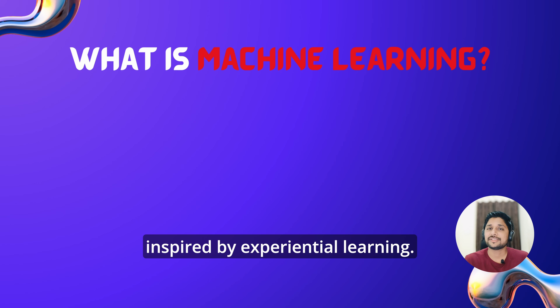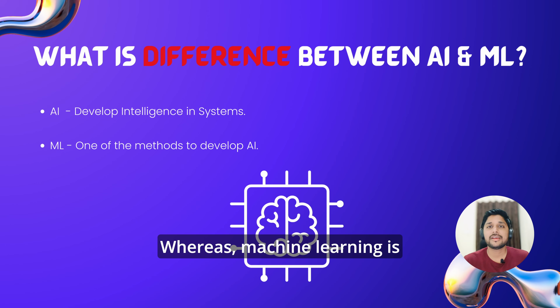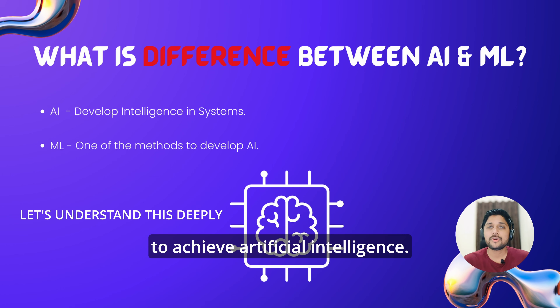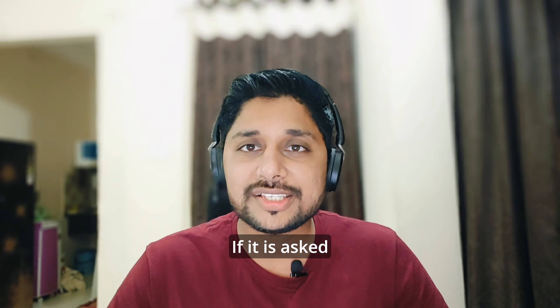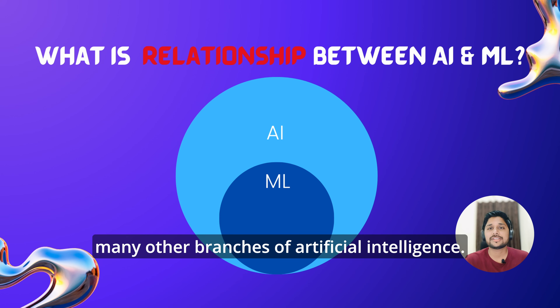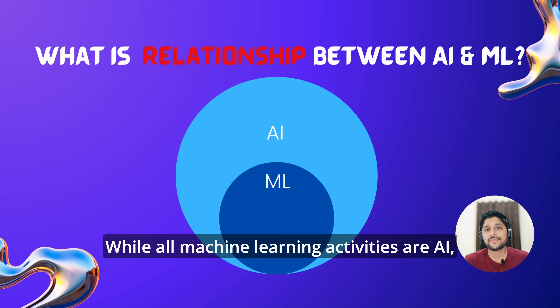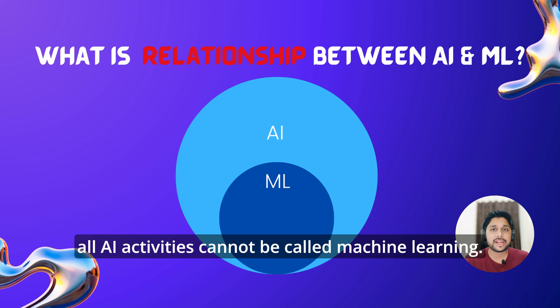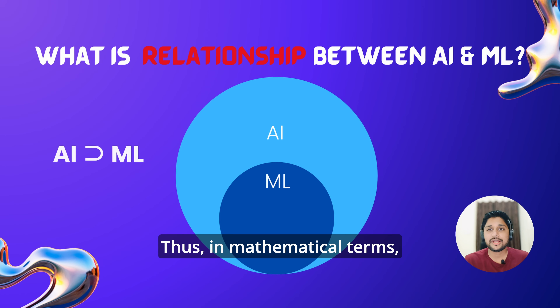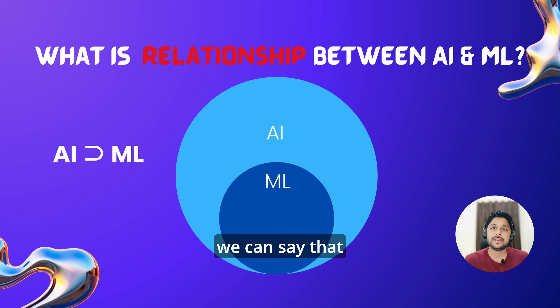Just like humans can learn by different strategies and techniques, one of the most effective ways of learning for humans is learning through experience. Machine learning is somewhat inspired by experiential learning. Machine learning is one of the many methods that computer systems follow to achieve artificial intelligence. If asked what is the relationship between AI and ML, you can respond that machine learning is one among many other branches of artificial intelligence.